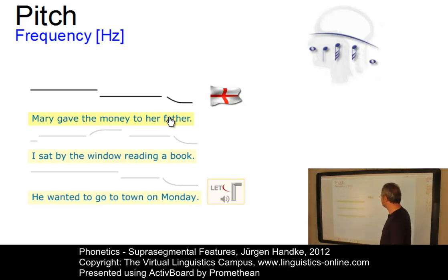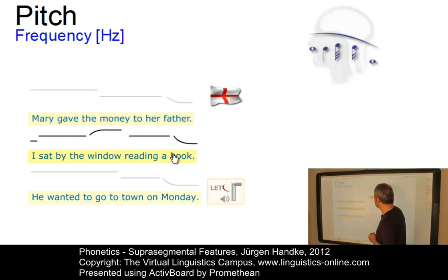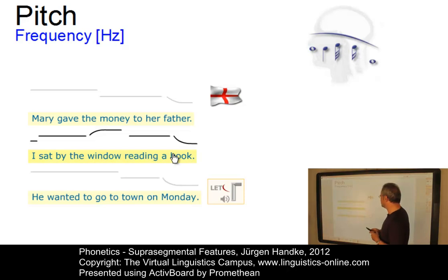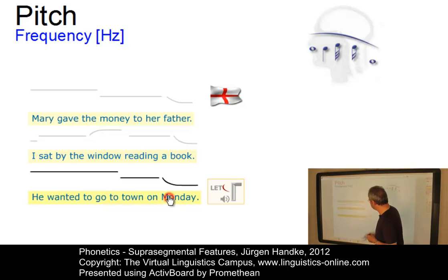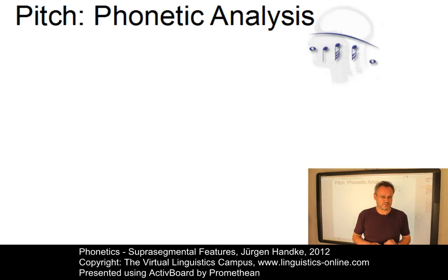Let's listen: 'Mary gave the money to her father.' We could perhaps assign three pitch levels to this sentence. In the next sentence we could possibly assign four levels: 'By sat by the window reading a book,' plus a little onset associated with the first syllable 'I.' And finally, three pitch levels again: 'He wanted to go to town on Monday.'